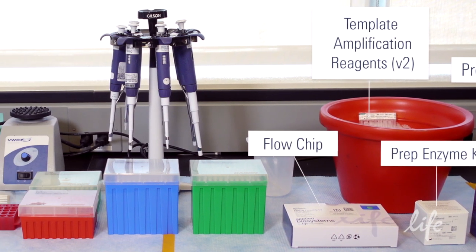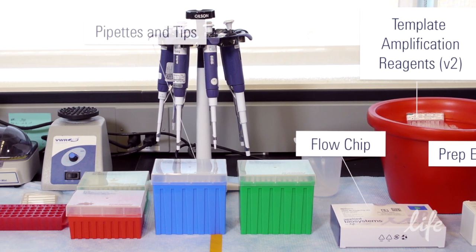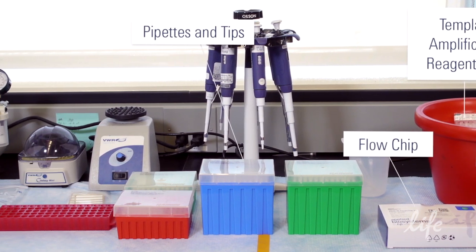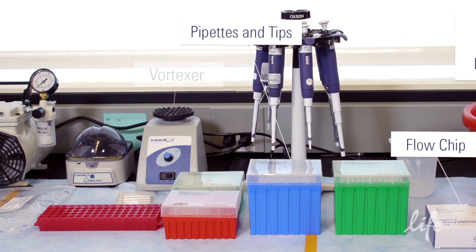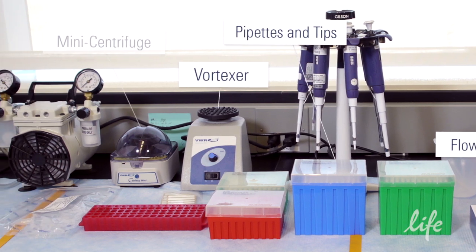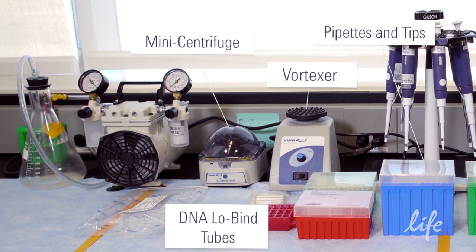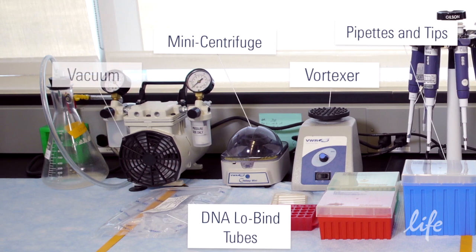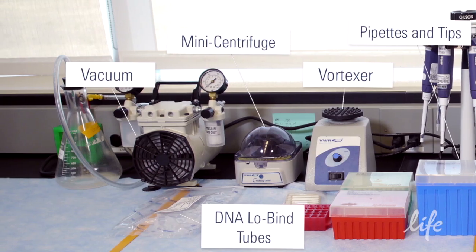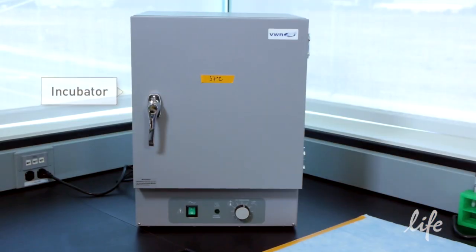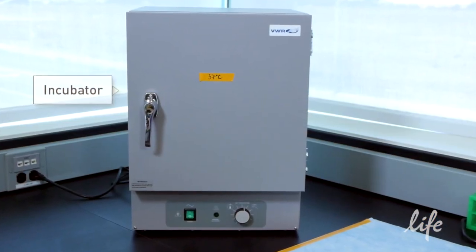The Solid Wildfire Flowchip, P2, P20, and P100 calibrated pipettes and tips, a vortexer, a mini centrifuge, Eppendorf 0.5 mL DNA Low Bind Tubes, a regulated vacuum, and a 37 degrees Celsius incubator.